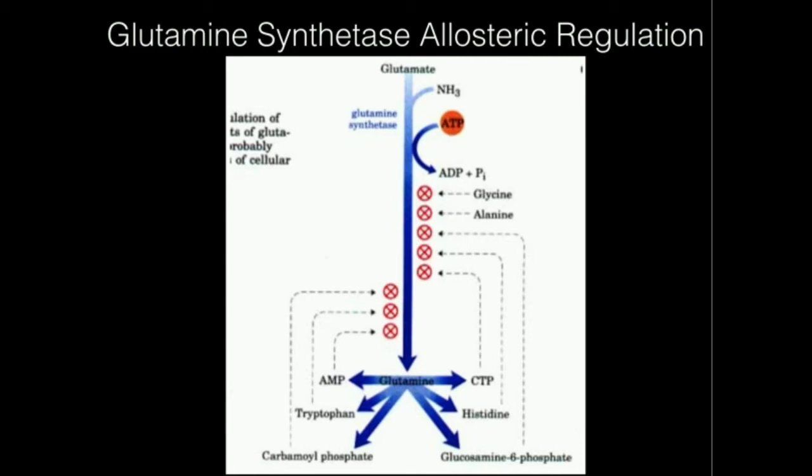When we have lots of these eight molecules around, they're going to turn glutamine synthetase off, because indirectly for glycine and alanine, but directly for the six products, they're indicators that we already have plenty of glutamine around, so we don't need to make any more.